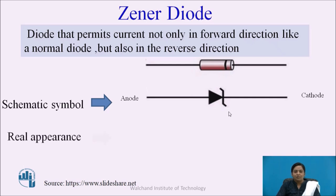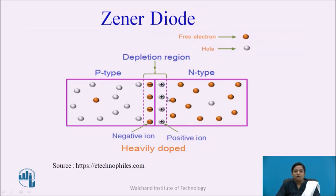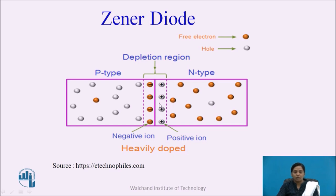The real appearance of Zener diode is like this. The breakdown voltage of Zener diode is controlled by the doping level of impurity. Doping means to add impurity into pure semiconductor material. The Zener diode is heavily doped, meaning a high amount of impurity is added into P and N type semiconductor. Due to this heavy doping, the width of the depletion region is small or thin as compared to a PN junction diode.